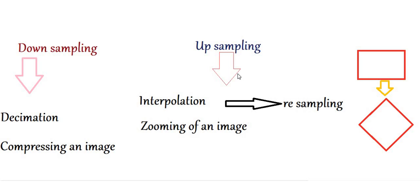Upsampling is also known as interpolation, and downsampling is also called decimation. An example of upsampling would be zooming of an image, and downsampling is compressing an image and reducing its size. There are many operators or filters used for both interpolation and decimation. Interpolation is also used for resampling, where you change the location of pixels in an image, making the image appear shifted or sometimes distorted compared to the original.